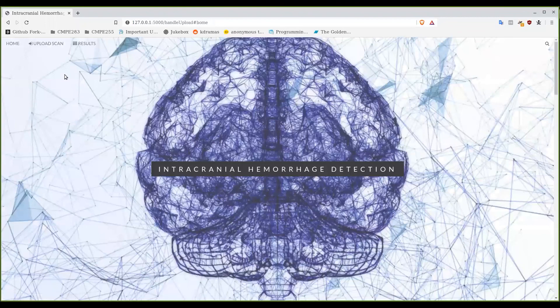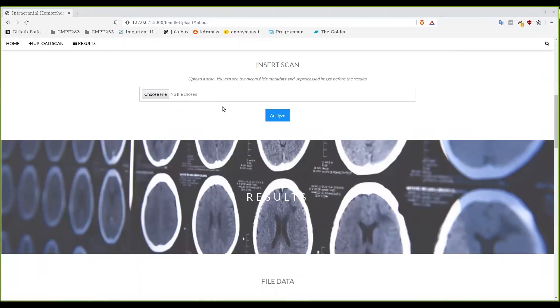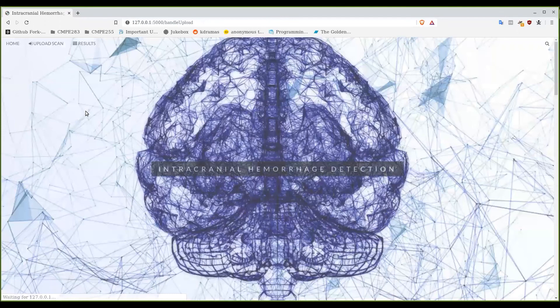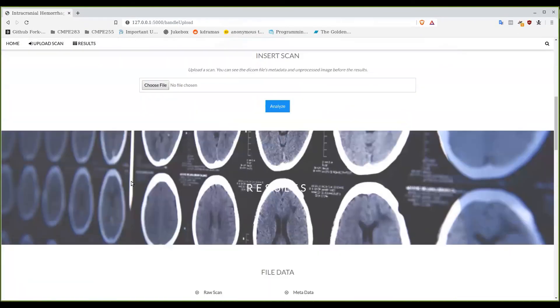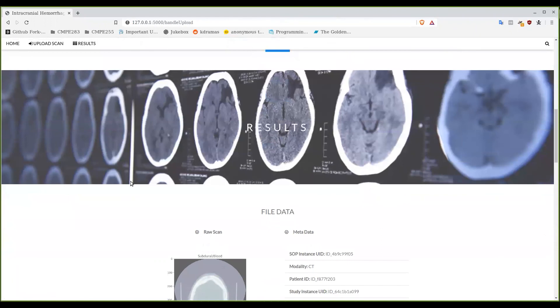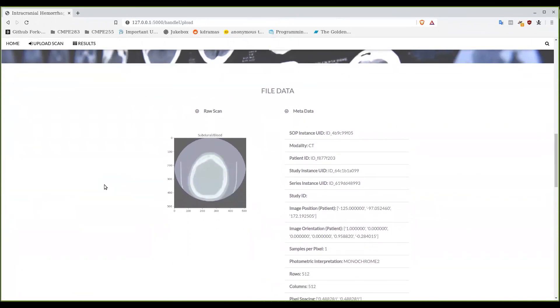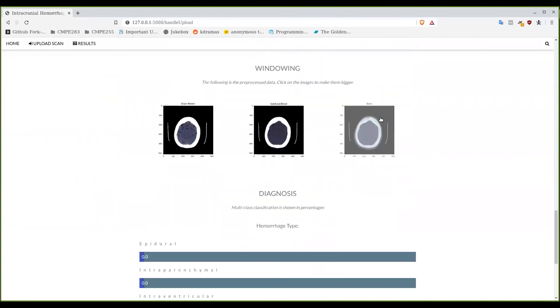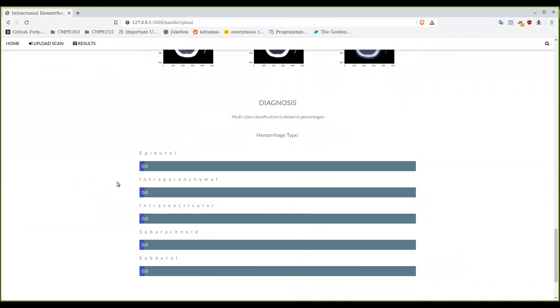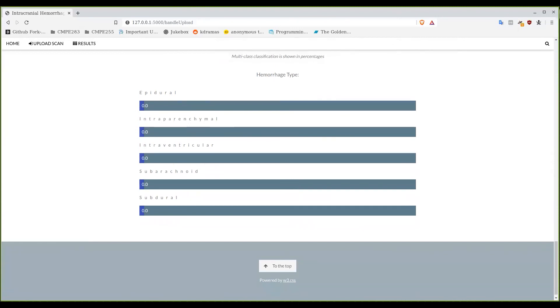We can run this again on a different image this time. Since this program can be easily deployed on a midrange computer, it would be easy to implement at a medical facility, and since it's run locally, it would mitigate issues with uploading images to the cloud and the security problems that can come with it. For this image, it seems like a healthy brain, and this patient does not have any kind of hemorrhage from their scan. Thank you.